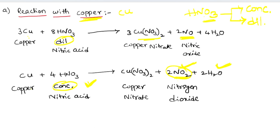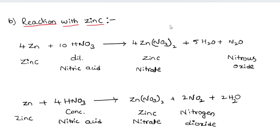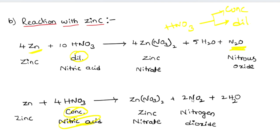Reaction with zinc: zinc reacting with dilute nitric acid forms nitrous oxide (N₂O) as the main product. Zinc reacting with concentrated nitric acid forms nitrogen dioxide. Zinc nitrate is also a common product in both reactions.